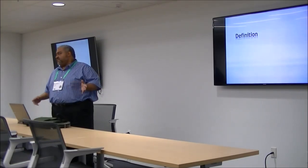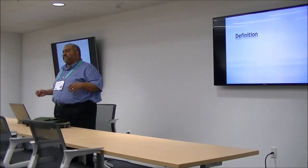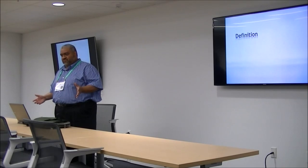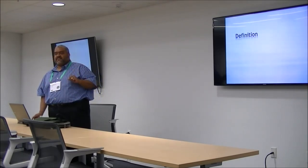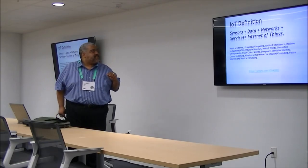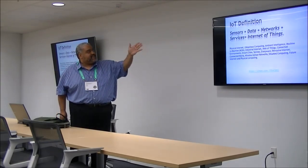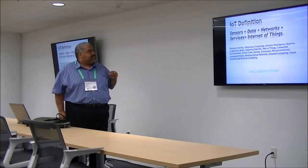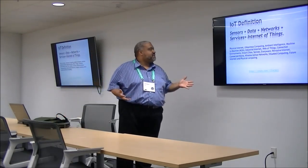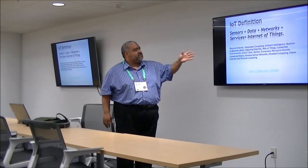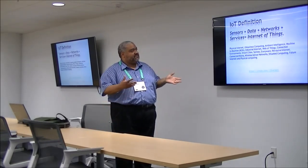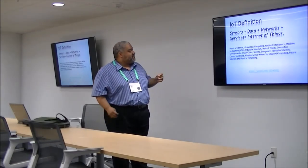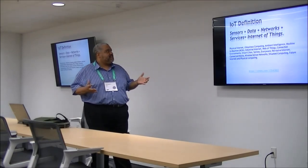There are a lot of definitions out there. The basic definition people say is that the Internet of Things is just a device that connects to the Internet. That's true. But really, the Internet of Things is basically sensors, data, networks, and services. There's also a lot of other terminology used — the physical Internet, ubiquitous computing, machine-to-machine interfaces, the web of things, connected environments, smart cities. It is very pervasive what the Internet of Things means.